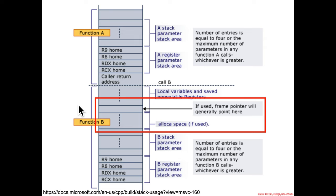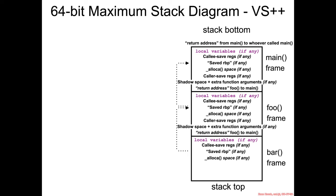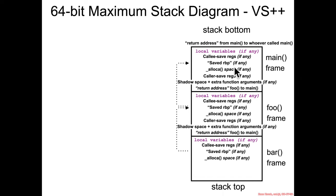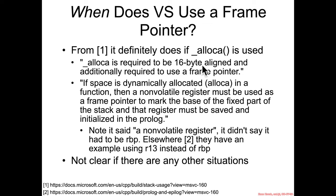It's a somewhat weird location — the frame pointer sits in the middle: after local variables and callee save registers, and before any alloca space or parameters. So if they have a stack frame, the saved rbp will be between local variables, callee save registers, any alloca space, and caller save registers. From the documentation, if you use alloca then a frame pointer is definitely required — alloca must be 16-byte aligned and requires a frame pointer.